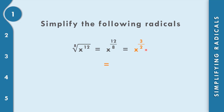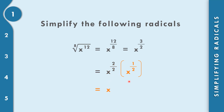With x to the 3 over 2, we separate this: x to the 2 over 2, which equals x to the 1 or simply x, and then x to the 1 half, which we convert back into radical form — that becomes the square root of x. So the final answer is x times the square root of x.